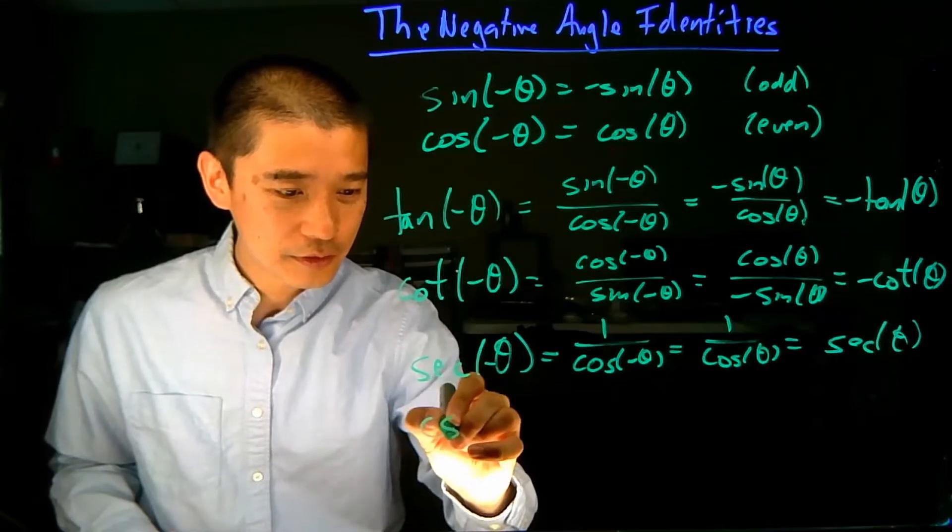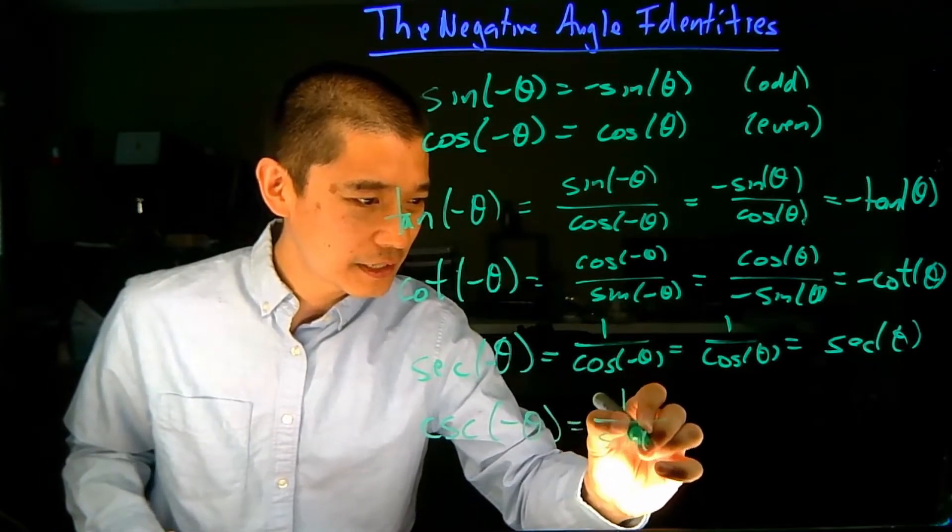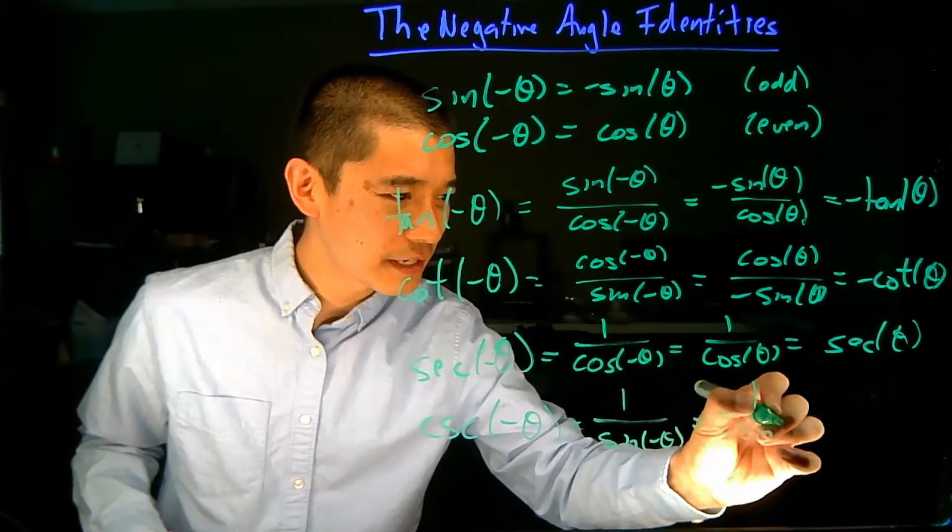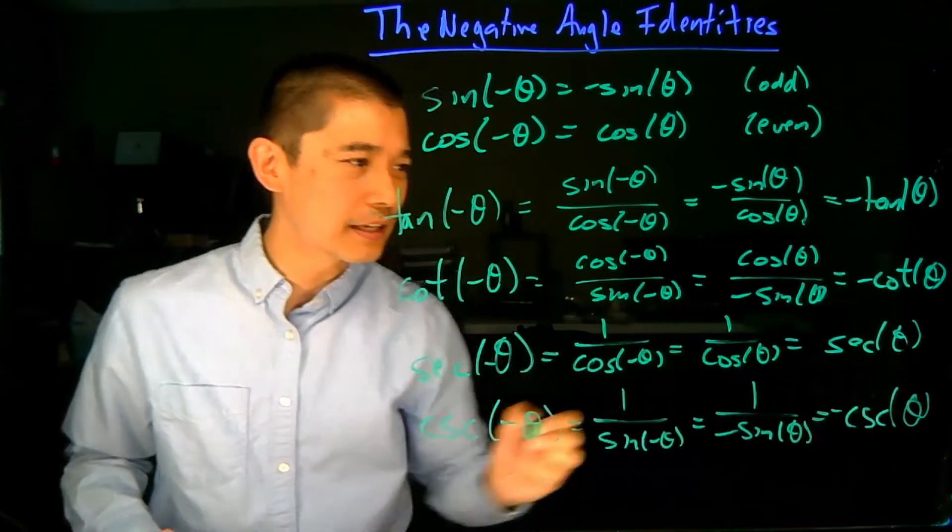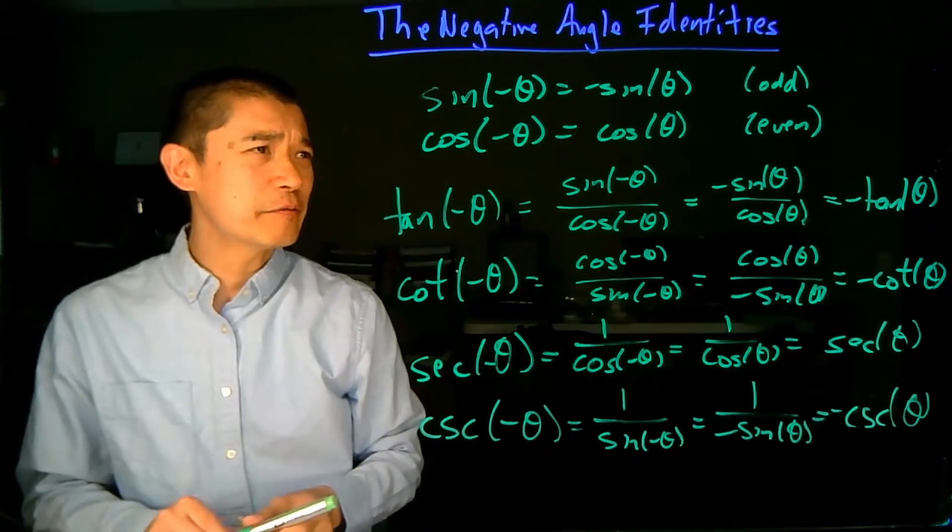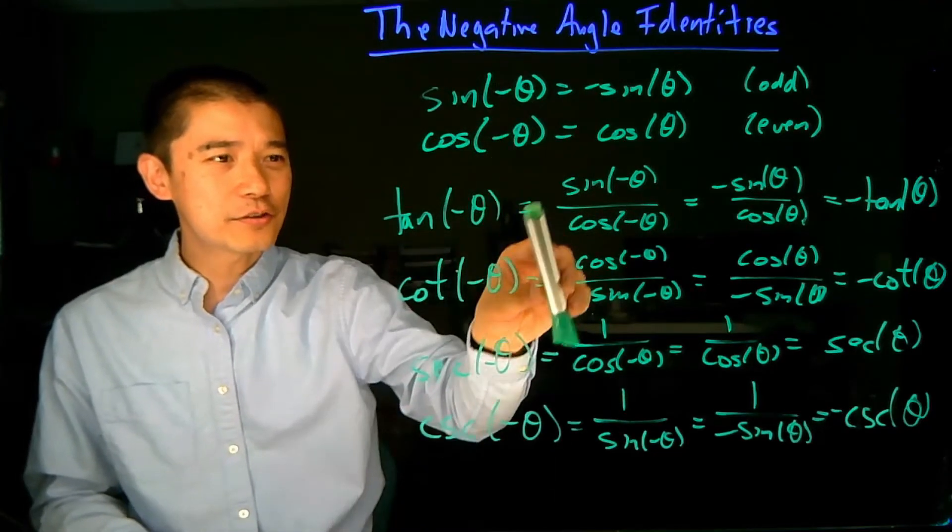And the last one, cosecant of negative theta is one over sine of negative theta, which is one over negative sine theta, which is negative cosecant theta. So, the upshot of all of this is that the cosine and secant functions are even, and the others are all odd functions.